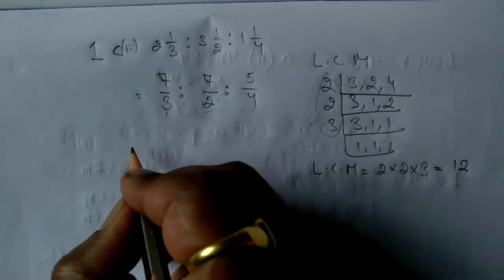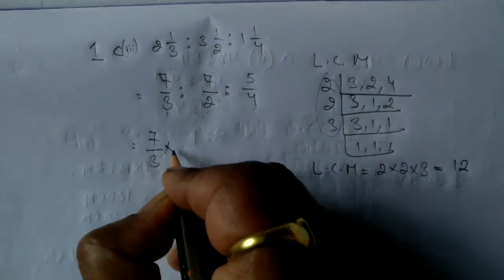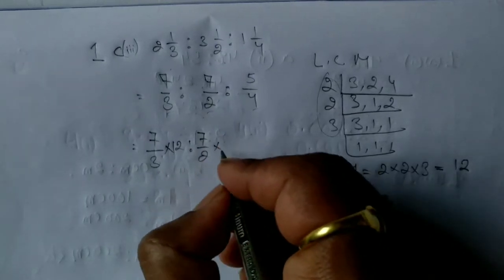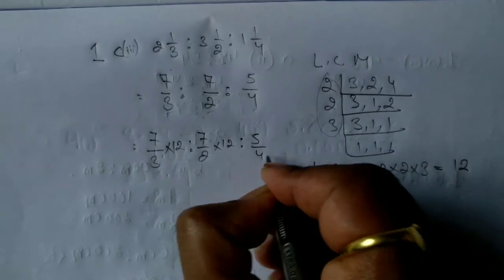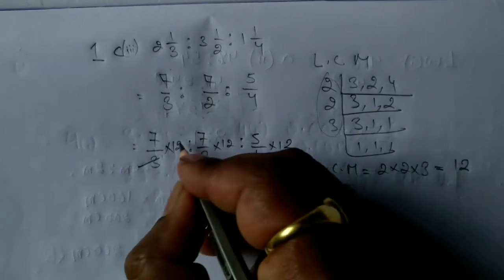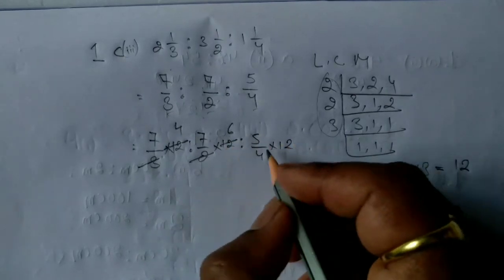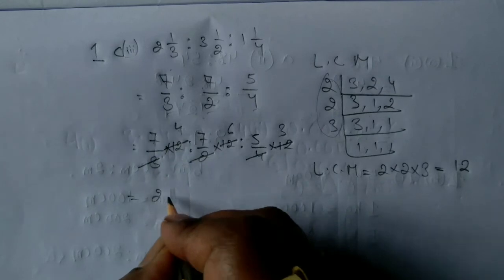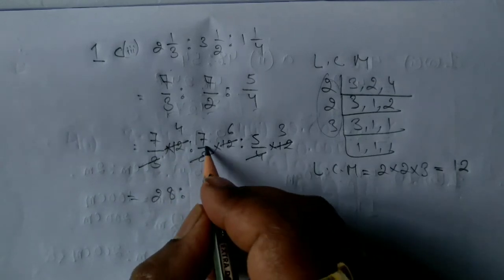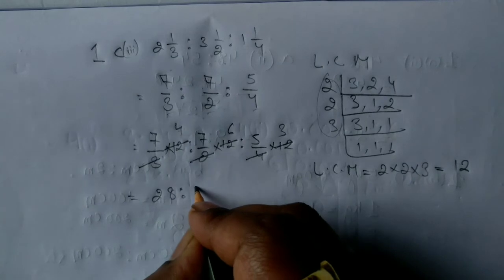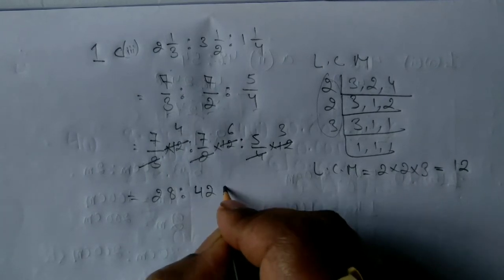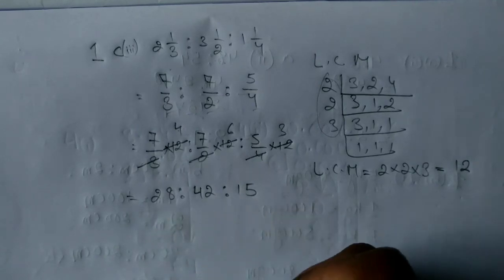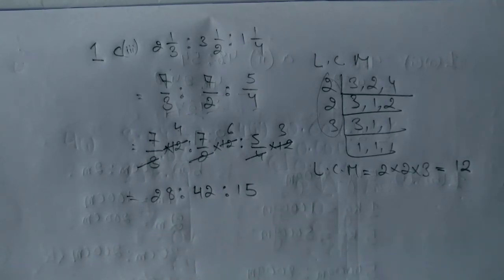So multiply each fraction by this number 12 as the LCM. 12 divided by 3 is 4 times, divided by 2 is 6 times, and divided by 4 is 3 times. So my answer will be 7 into 4 which is 28 is to 7 into 6 which is 42 is to 5 into 3 which is 15. So this is the answer for number c3.